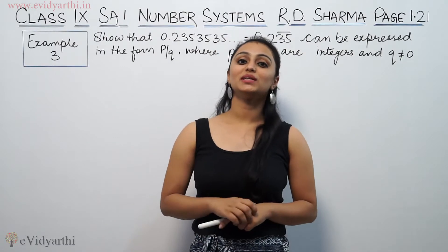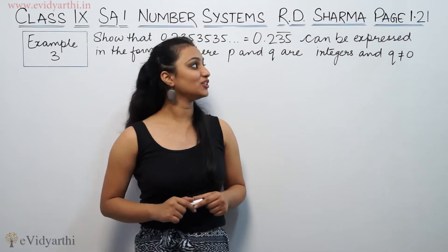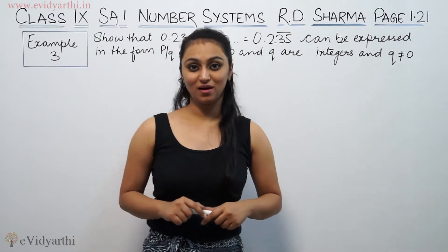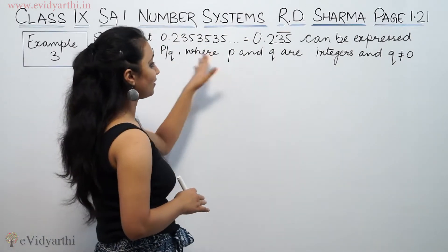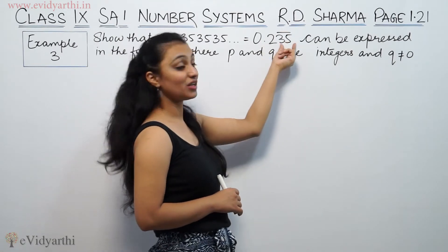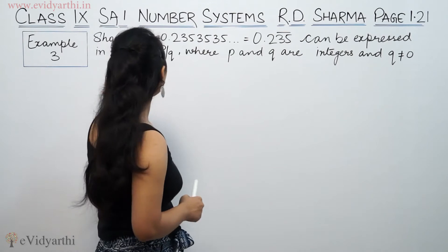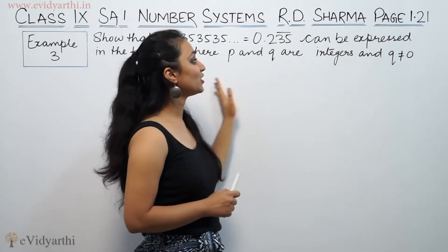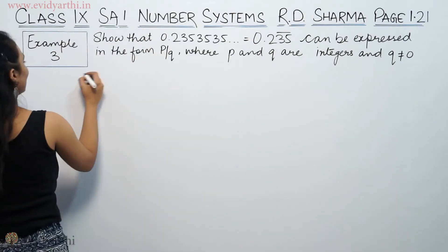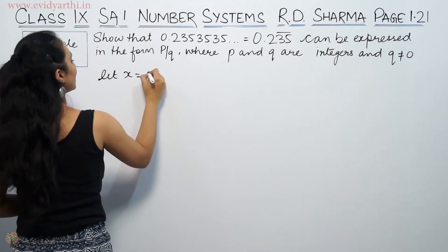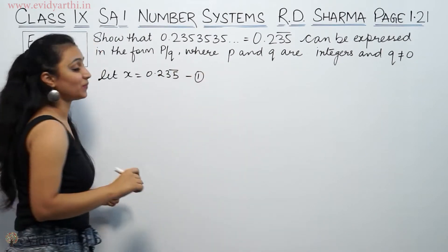Hey, what's up? This is Pushpoo with another question on number systems. This is example number 3 from page number 1.21 of Adi Sharma. It says: show that 0.2353535... (repeating) is rational.